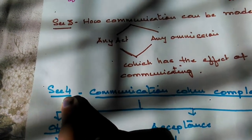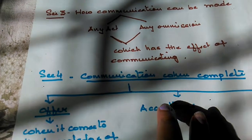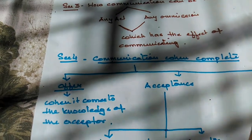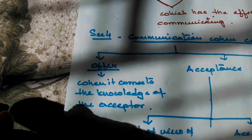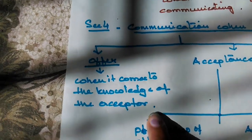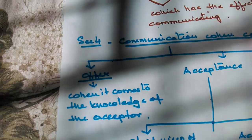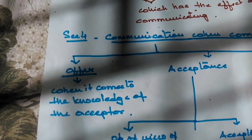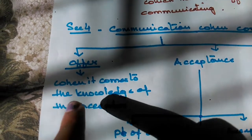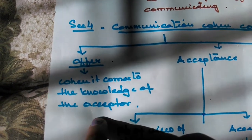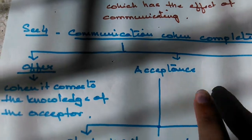Section 4 says when communication is complete. The first part covers communication of offer — when is it complete? Communication of offer is complete when the offer comes to the knowledge of the acceptor. Before that, the offer is not complete, and the offeror is at liberty to revoke the offer at any time before it comes to the knowledge of the acceptor.